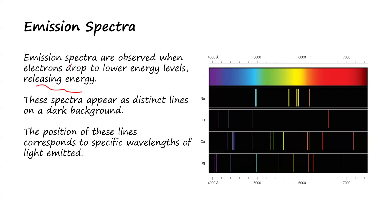For example, when electrons from a higher shell come back to the first or second shell of a particular atom, they release energy. The emission of that energy is what makes the electrons drop down to a lower energy level. Emission spectra occur when energy is emitted and electrons move from higher energy levels to lower energy levels. This spectra appears as distinct lines on a dark background.